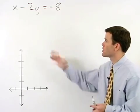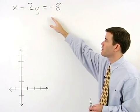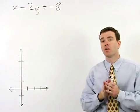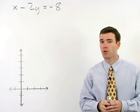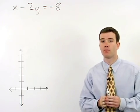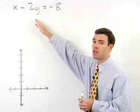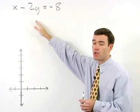To graph the line that has the equation x minus 2y equals negative 8, we would first convert the equation to slope intercept or y equals mx plus b form. In other words, we want to get y by itself on the left side of the equation before we graph.